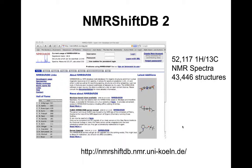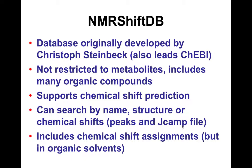There's another open-source database called NMR ShiftDB, with about 50,000 spectra for around 40,000 compounds. It's maintained in Germany — Chris Steinbeck originally developed it. It's not restricted to metabolites; it includes many chemical compounds. It has nice tools for chemical shift prediction, similar to mass spectral prediction, and you can search through a variety of mechanisms and names.